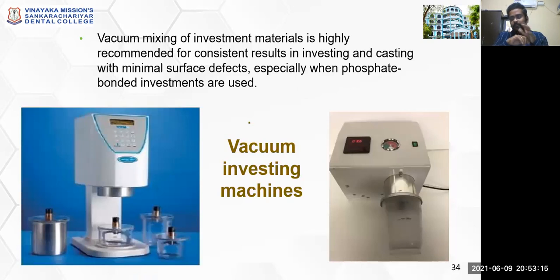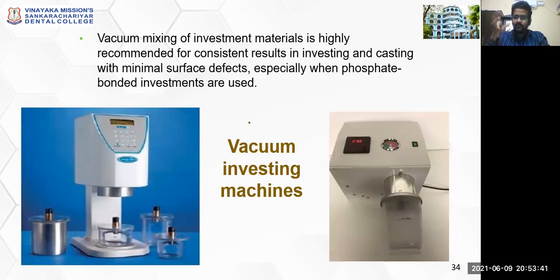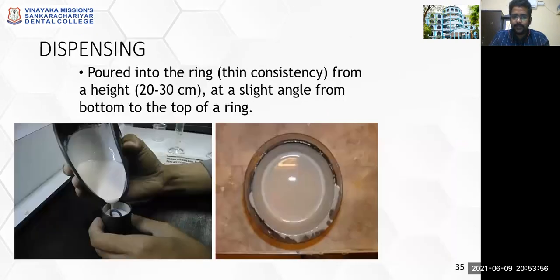The main aim of this mixing is to achieve minimal or absolutely no bubbles. If there are many bubbles in the mixed investment and it is poured into the casting ring, there will be bubbles in the investment. To avoid this, vacuum investment mixing machines are available where the investment powder and liquid are dispensed at the proper ratio and given a proper vacuum mixing without any air bubbles. The same can then be poured into your casting ring assembly.